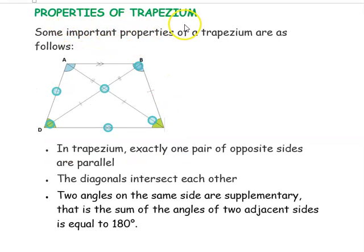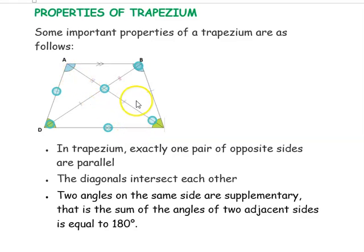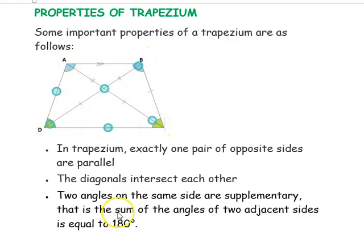Now for the properties of trapezium: exactly one pair of opposite sides is parallel. The diagonals intersect each other such that corresponding segments are equal. Two angles on the same side are supplementary, meaning their sum is 180 degrees. So angle A plus D equals 180°, A plus B equals 180°, B plus C equals 180°, and C plus D equals 180°.